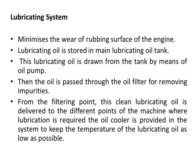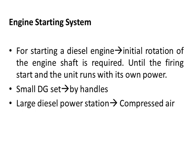The engine starting system: small diesel power stations can be started manually, but large diesel generating sets cannot be started by manual methods. In that case, compressed air is used for starting. For starting a diesel engine, an initial rotation of the engine shaft is required until firing starts and the unit runs on its own power. For small DG sets, this initial rotation is provided by handles manually, but for larger diesel power stations, compressed air is used.